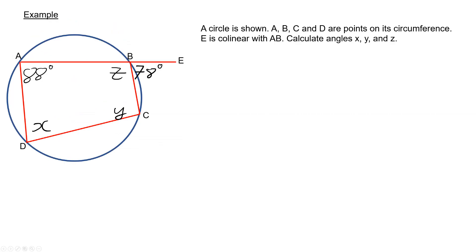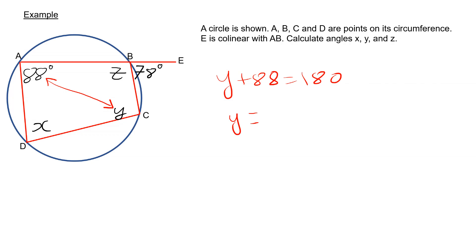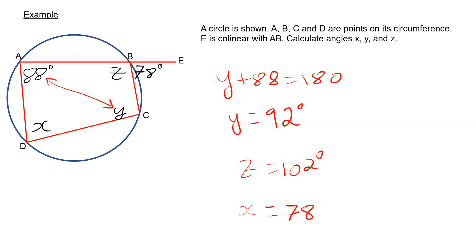Looking at this question, Y plus 88 adds up to 180. To find Y, we subtract 88 from both sides, giving Y equal to 92 degrees. To find Z, we use angles on a straight line: Z is 180 take away 78, which is 102. So Z is 102 degrees. To find X, we use X plus Z equals 180, so X is 180 take away 102, giving X equals 78 degrees.